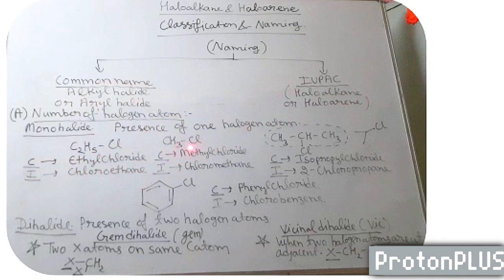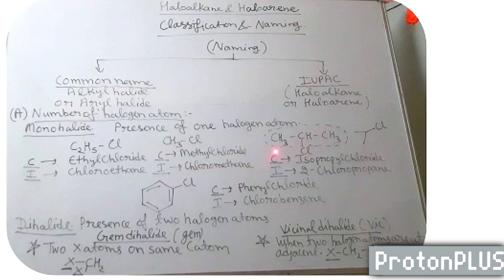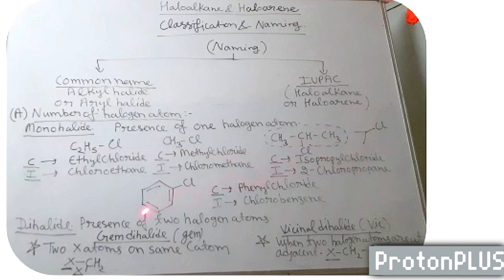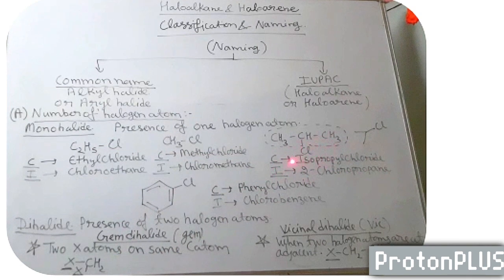Similarly, if we take CH3Cl, it is methyl chloride and IUPAC is chloromethane. If we take CH3CHClCH3 — that is the isopropyl group — the halogen atom is present on the 2 degree carbon atom. So the common name is isopropyl chloride and the IUPAC name is 2-chloropropane. The halogen atom position is 2, so we write 2-chloro, and the longest chain is of 3 carbon atoms — 2-chloropropane.